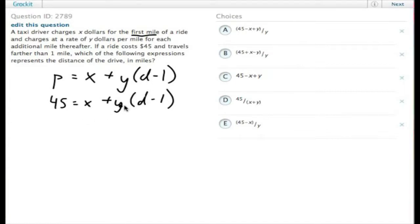If we simplify this out, we get 45 equals X plus DY minus Y. Y times negative 1 there. Now we can subtract X and add Y to both sides, and it becomes 45 minus X plus Y equals DY.